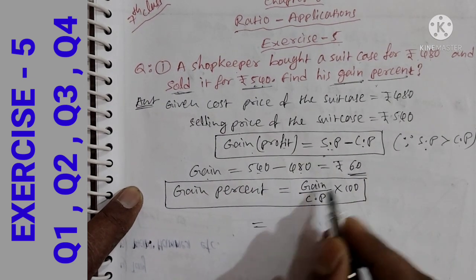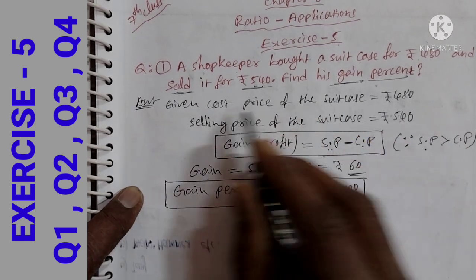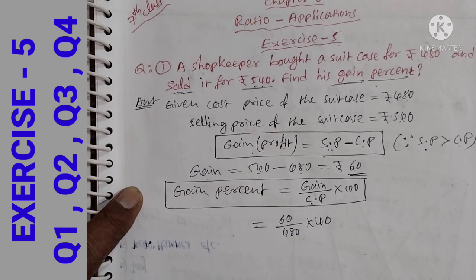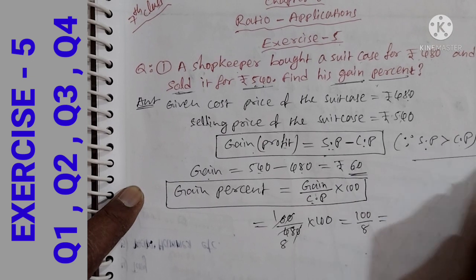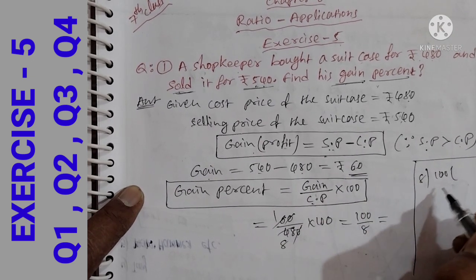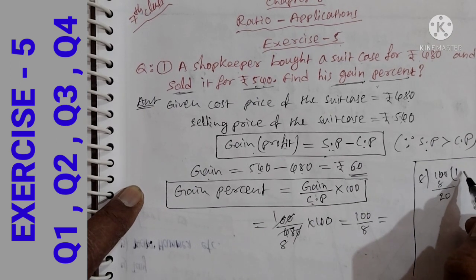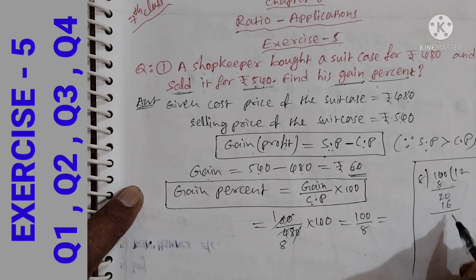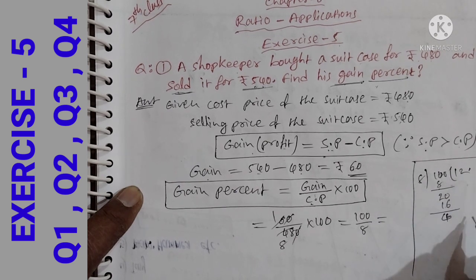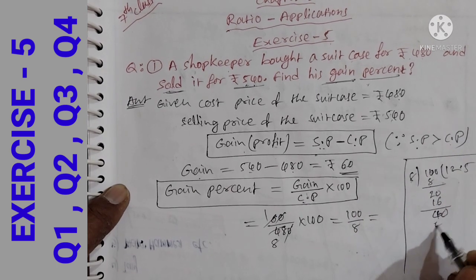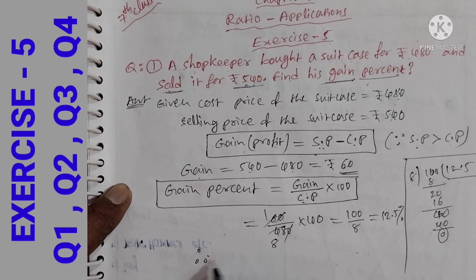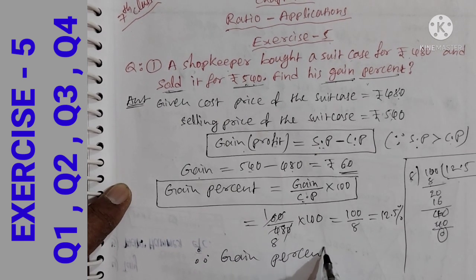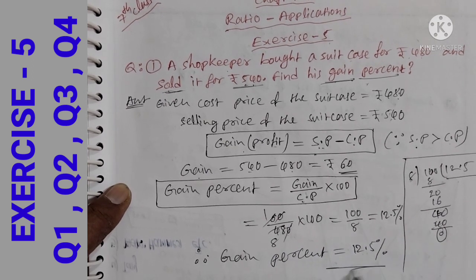Gain percentage = 60 divided by 480, multiplied by 100. Cancel the zeros: 60 by 480 into 100 simplifies to 100 by 8, which equals 12.5. Therefore, gain percent is equal to 12.5%.